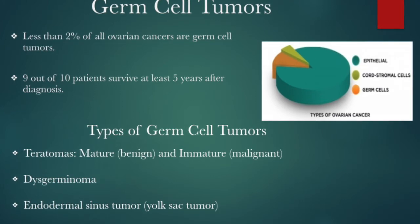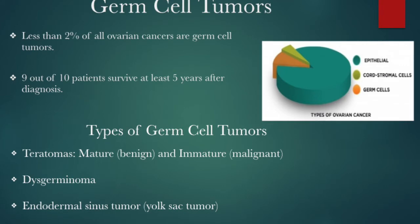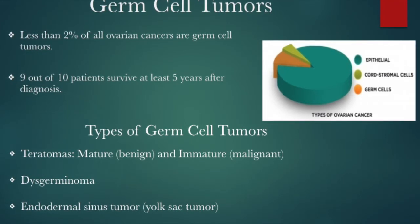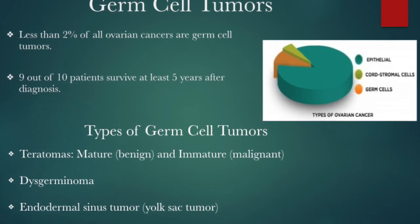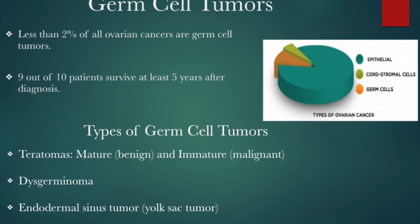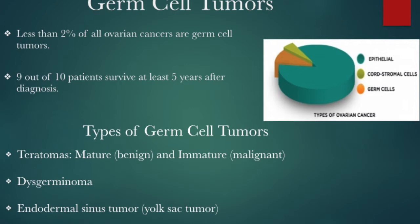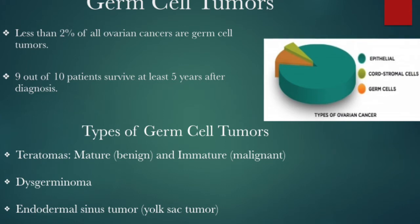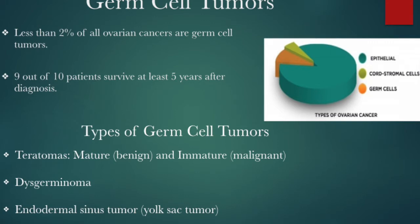Endodermal sinus tumors are called yolk sac tumors. These are malignant and when found in the ovary they are very aggressive and metastasize rapidly through the lymphatic system and to other organs throughout the body. Choriocarcinoma is a very rare germ cell tumor that actually arises within the chorion layer of the placenta during pregnancy. This is a tumor that will mimic a pregnancy by showing elevated HCG levels. However, 50% of these are what is called a hydatidiform mole, which does not form a viable pregnancy.